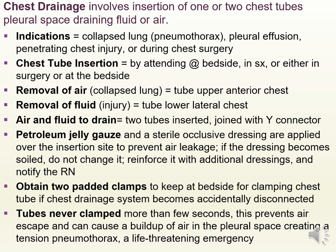Petroleum jelly gauze and a sterile occlusive dressing are applied over the insertion site to prevent air leakage. If the dressing becomes soiled, do not change it — reinforce it with additional dressings and notify the RN. Two padded clamps are kept at the bedside for clamping the chest tube if the drainage system becomes accidentally disconnected. However, the tube should never be clamped more than a few seconds — check your policy. Clamping can prevent air escape and cause a buildup of air in the pleural space, creating a tension pneumothorax, a life-threatening emergency.